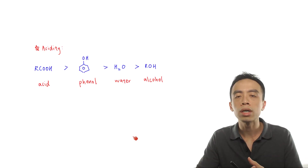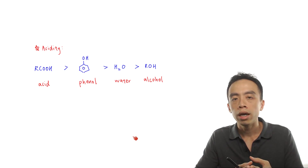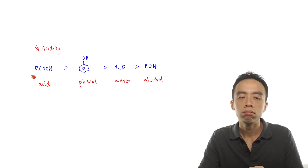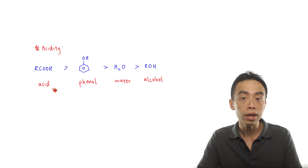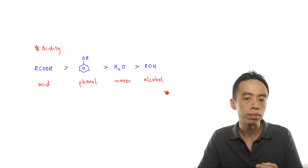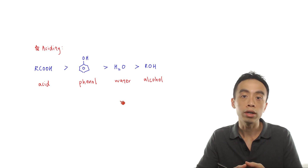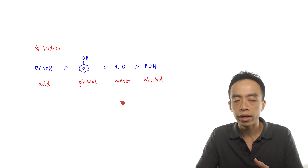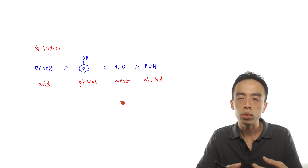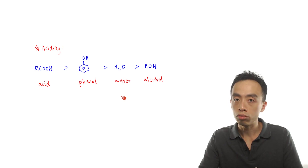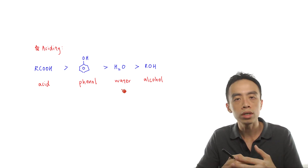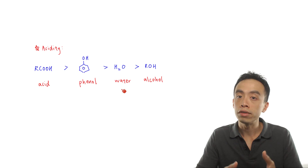Let us list down some of the functional groups in syllabus and compare them in terms of acidity. Carboxylic acids are the most acidic functional group, followed by phenol, followed by water, followed by alcohol. Technically, water is not an organic compound, but it is useful as a reference. We know water is neutral, so if phenol is more acidic than water, we expect phenol to dissociate in solution to give H+ when dissolved in water.